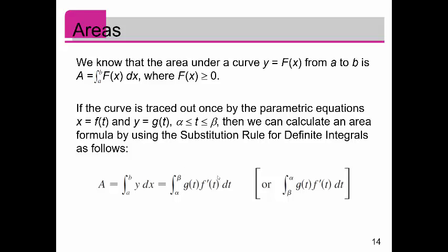Just remember this formula here, so keep this handy. The area is the integral from alpha to beta, g of t f prime of t dt, where g of t is the parametric equation for y, and f prime of t is the derivative of x with respect to t.